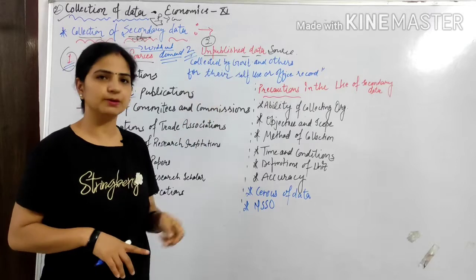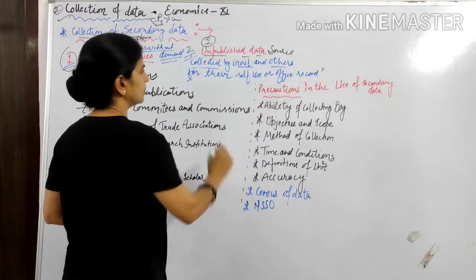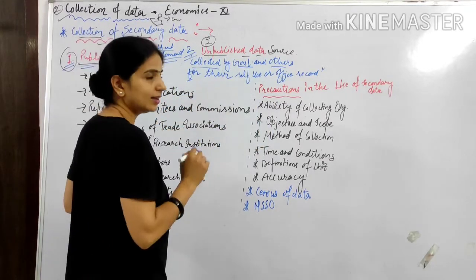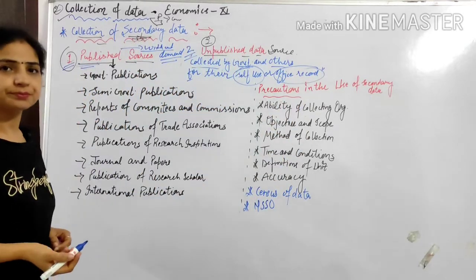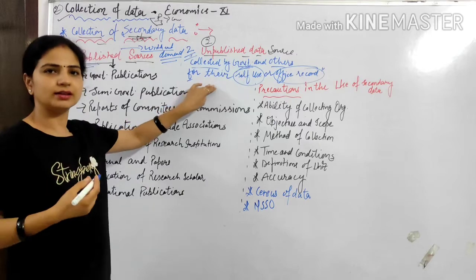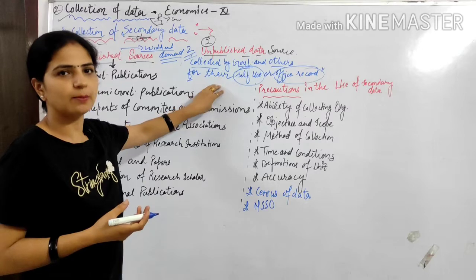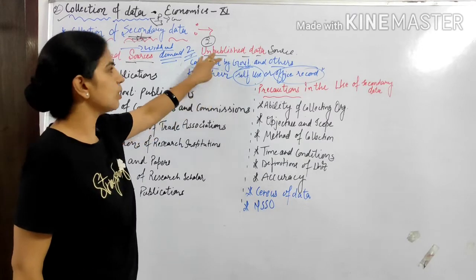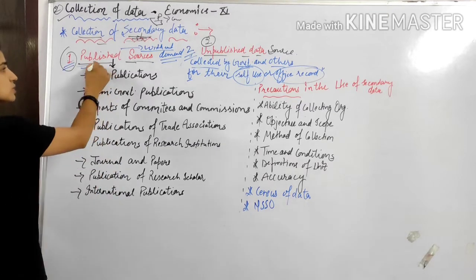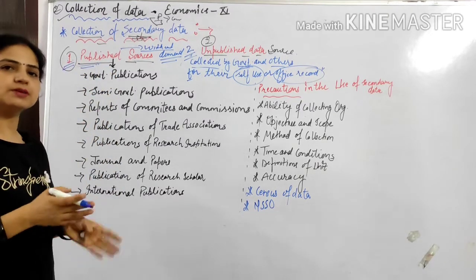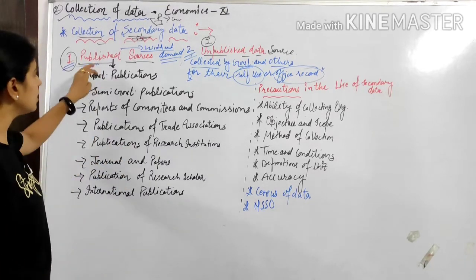Unpublished data is data which organizations collect for their own self-use — their office records. They don't publish it publicly. If you have a requirement, you can demand it, but without demand, they won't give the data. This is called unpublished data — it doesn't show publicly. In contrast, once your research and study is complete, if you publish it through your publications, that is called published data.